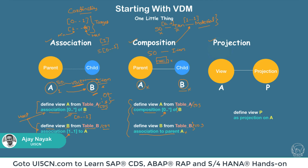Projection is completely different from association and composition. A projection CDS view can only project from one single source — so if P is a projection of A, it cannot include fields from B as part of the same projection. The need for projection arises when you have a composite CDS view used by many projects, and you have a specific app requirement — for example, building an SAP UI5 front end — that requires very specific UI annotations.